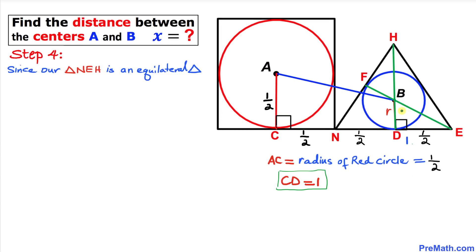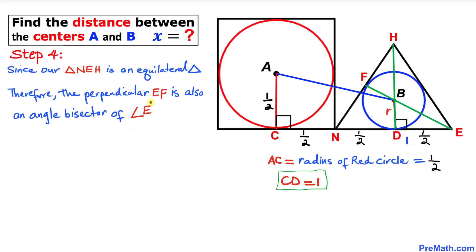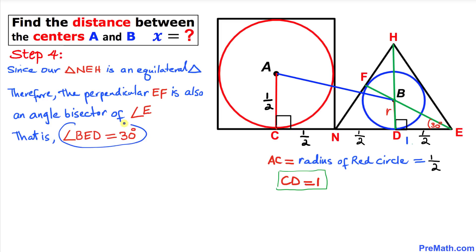Since triangle NEH is equilateral and the perpendicular EF is the angle bisector of angle E, if angle E is 60 degrees then this bisected angle is 30 degrees. Therefore angle BDE is 30 degrees.